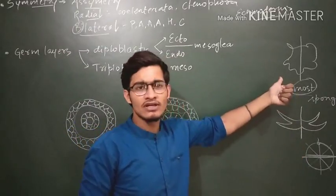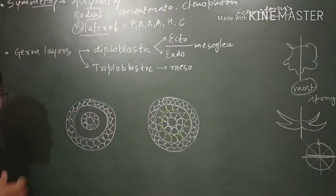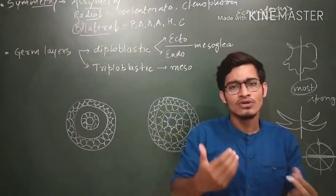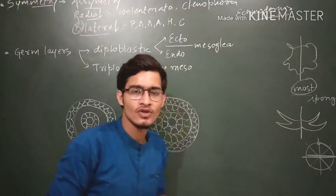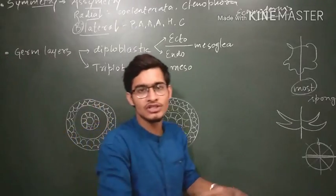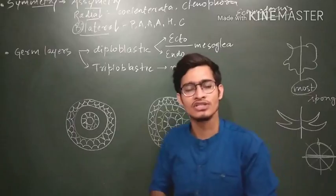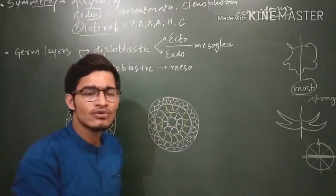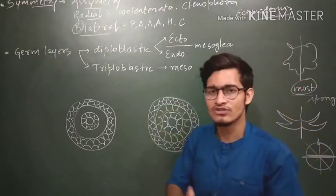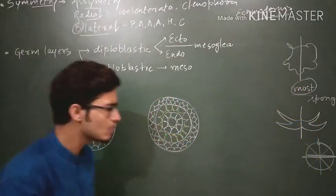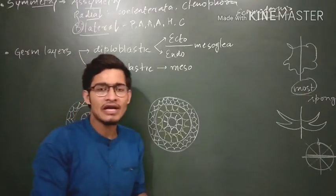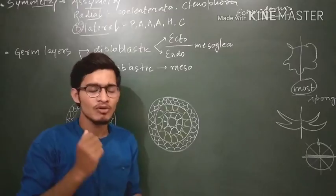Now, during the development process of an animal, organs develop from different kinds of germ layers. You may have heard that a particular organ is mesodermal in origin, or a particular organ is ectodermal in origin. So mesoderm, ectoderm, and endoderm are nothing but germ layers, and those germ layers give rise to different kinds of organs. On the basis of the number of germ layers, animals can be divided into diploblastic and triploblastic organisms.